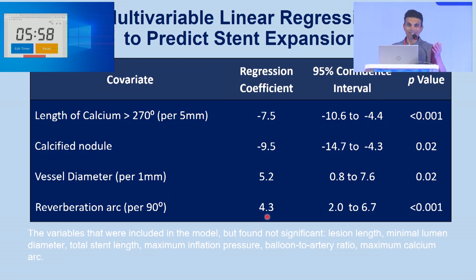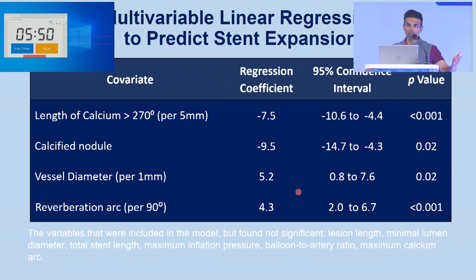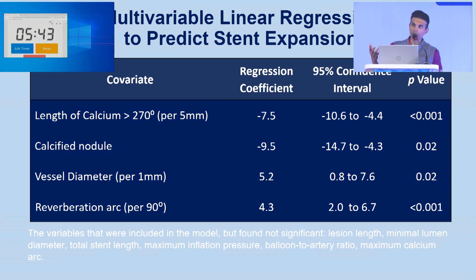The reverberation arc is less likely to be a problem — that's why the regression coefficients are positive here and negative here. Negative means you are less likely to get good expansion; positive means it is less likely to be a problem. So the bigger the vessel, the less likely you have a problem. The more reverberation, the less likely you are to have a problem, because it means the calcium is thinner there.